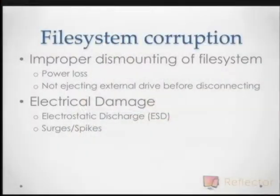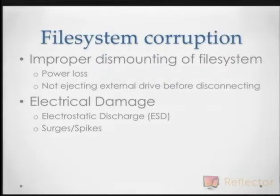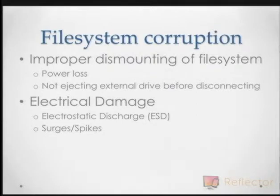File system corruption is a third type of data loss. This generally happens due to improper dismounting of the file system — either unplugging an external device without ejecting it properly, or incurring a sudden power loss, especially with desktop machines. Laptops are less prone because the battery keeps the machine running if power goes out, allowing a safe shutdown. But if you run the battery to zero, you can run into the same issue. When a computer loses power without a proper shutdown, it's like being interrupted while cleaning a room — the file system can't identify where to start accessing files.